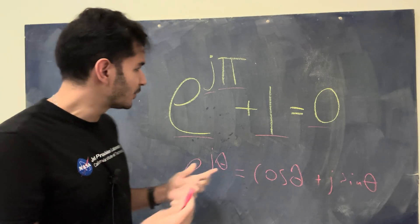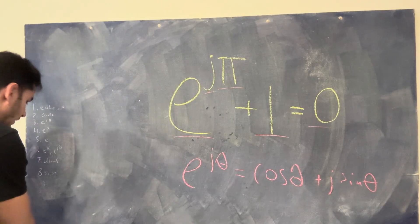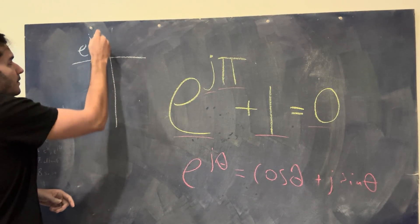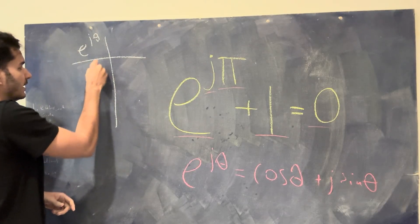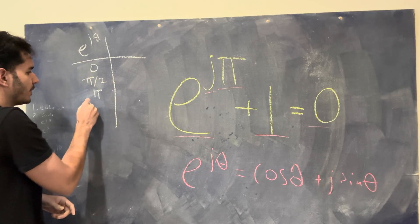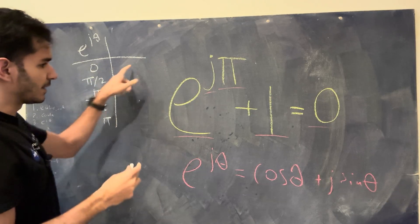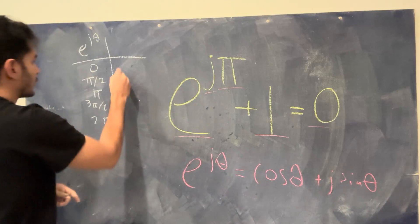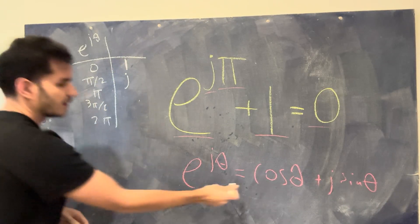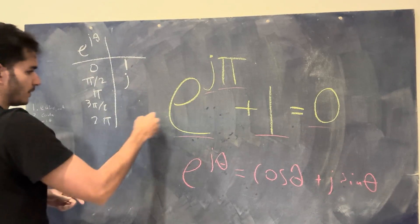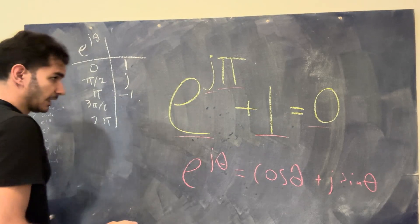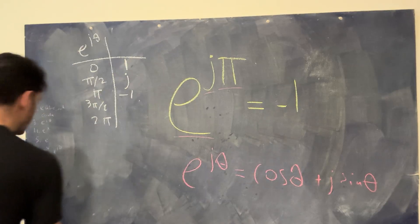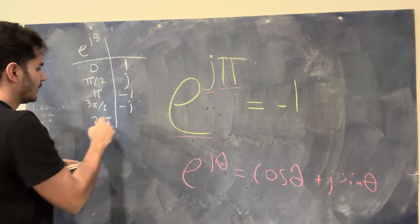This is not the only equation that looks like that, because this equation is only a special form. I can prove this by drawing a table of e to the j theta for different values of theta. At 0, we get cosine 0 plus j sine 0, which is 1 plus 0, so 1. At pi over 2, it's j. At pi, it's negative 1. At 3 pi over 2, it's minus j. And then at 2 pi, we're back to 1.